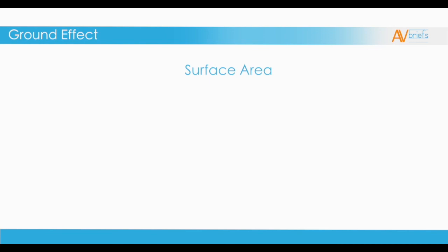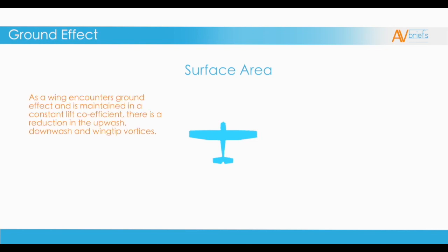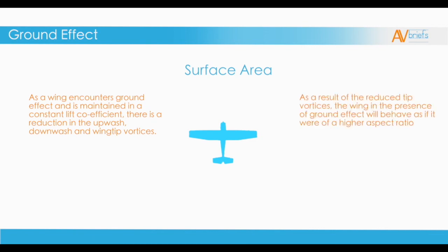The last thing to look at is the surface area of the wing. As a wing encounters ground effect and is maintained in a constant lift coefficient — meaning no change is made to the angle of attack and airspeed — there is a reduction in the upwash, downwash, and wingtip vortices. As a result of the reduced tip vortices, the wing in the presence of ground effect will behave as if it were of a higher aspect ratio. The aspect ratio refers to the length times width of the wings, so the wings theoretically act more like a glider with a longer width.